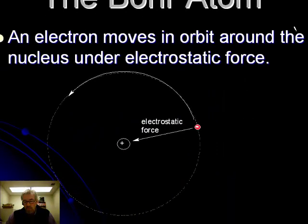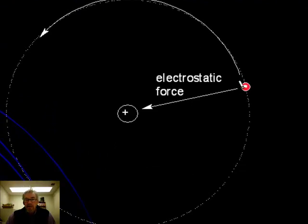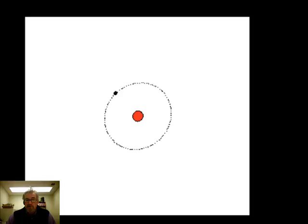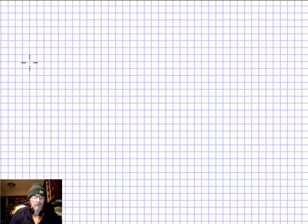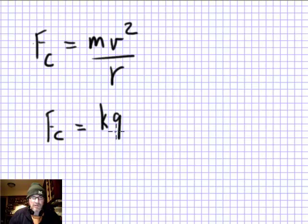Here's Bohr's idea: the electron moves in orbit around the nucleus, held by an electrostatic attraction between the negatively charged electron and the positively charged proton — just like Earth is held to the sun by gravity. Every classical physicist knew that the centripetal force for a rotating object is mv²/r. This centripetal force is created by the electrostatic attraction, governed by F = Ke²/r², where e is the charge on an electron and r is the orbital radius.